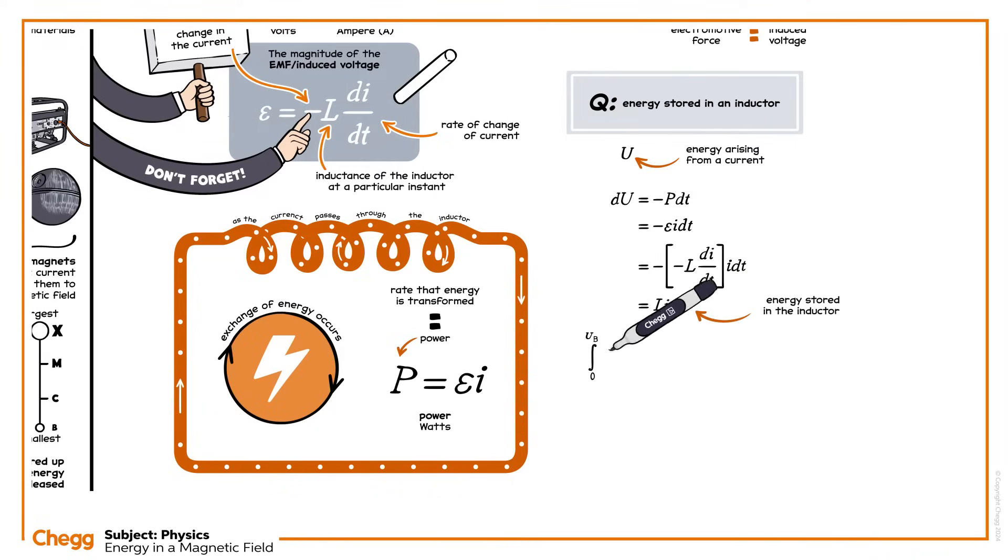Say the current starts at zero and increases to I_B. As the current changes, the circuit charges or discharges. Integrating over the change, we see that the energy stored in the inductor, U_B, equals a half times by inductance times by current squared.